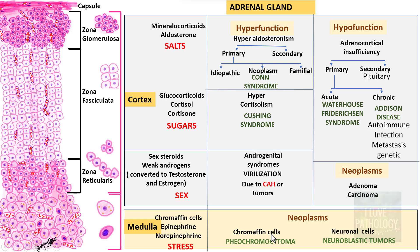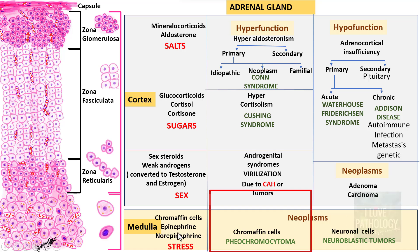In the last four sessions we have talked about the anatomy, histology and functions of the adrenal gland, along with hyperfunctions of the zona glomerulosa, fasciculata and reticularis. In this session we will look into the neoplasms of adrenal medulla, particularly Pheochromocytoma.